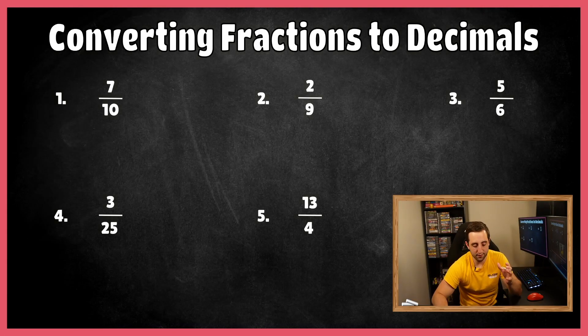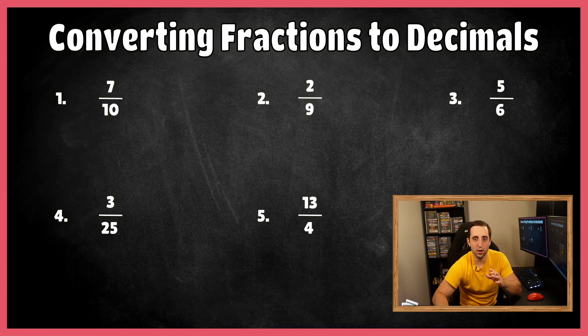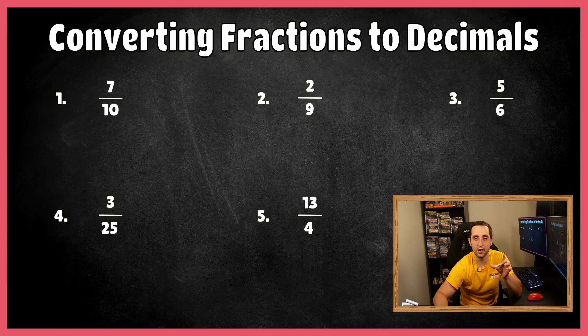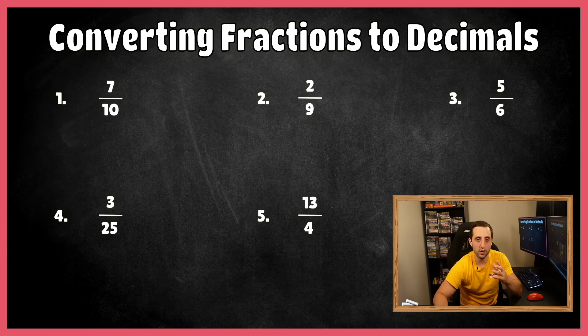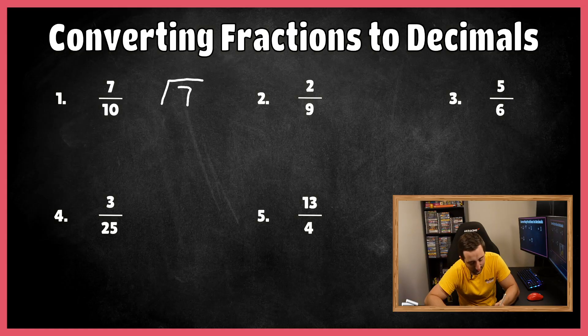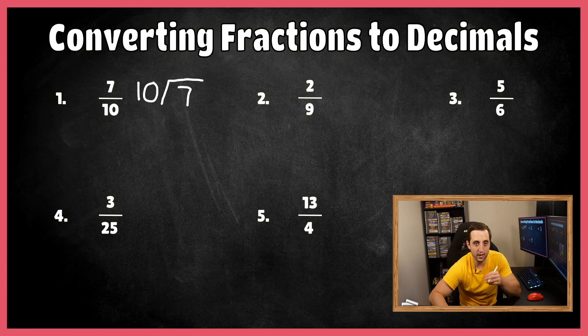For the first question, we have 7 tenths as a fraction, and the very first thing that you want to do is divide the numerator by the denominator. So the 7 is going to be your dividend, which I'm just going to give you that terminology now in case you ever hear that in your classes. Dividend is the inside number on a division problem, and the 10 or the denominator is going to be your divisor or the number on the outside.